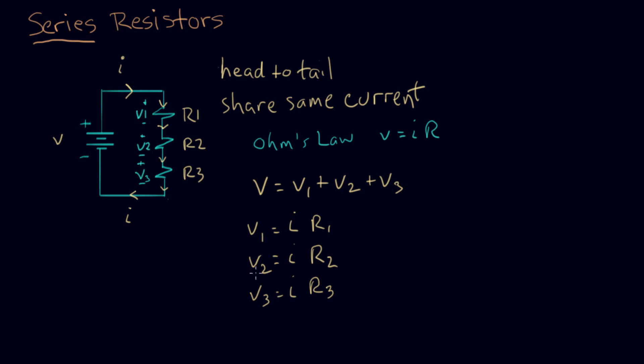So now what I'm gonna do is substitute these voltages into here, and then we'll make an observation. So let's do that substitution. I can say V equals I R1 plus I R2 plus I R3. And because it's the same I on every resistor, I can write V equals I - I'm gonna factor out the I - R1 plus R2 plus R3.